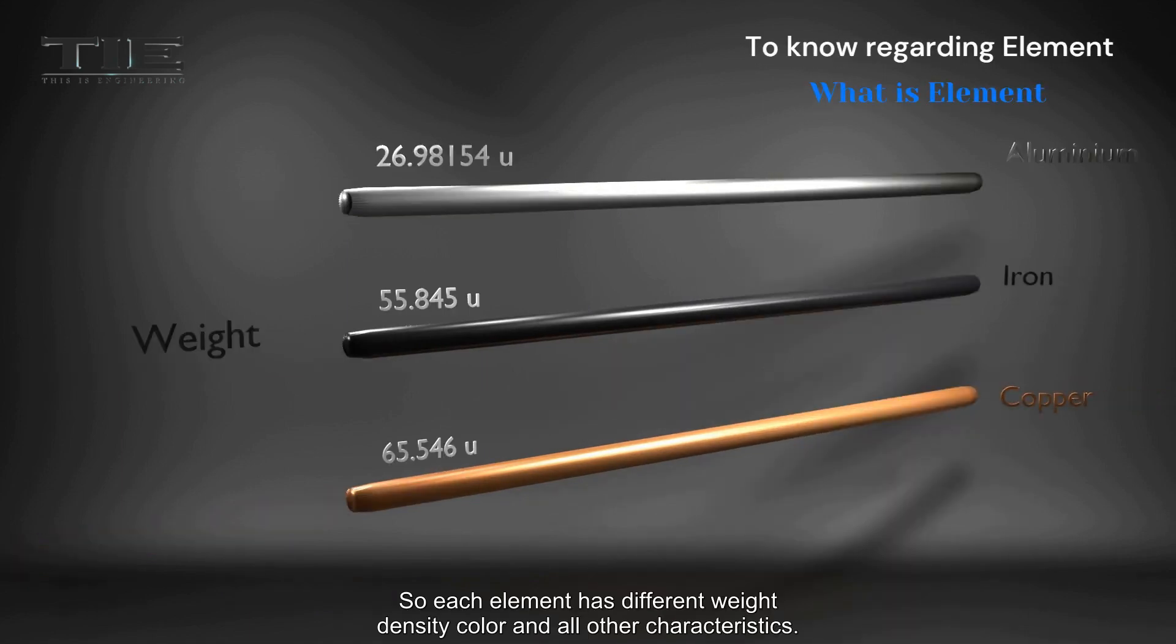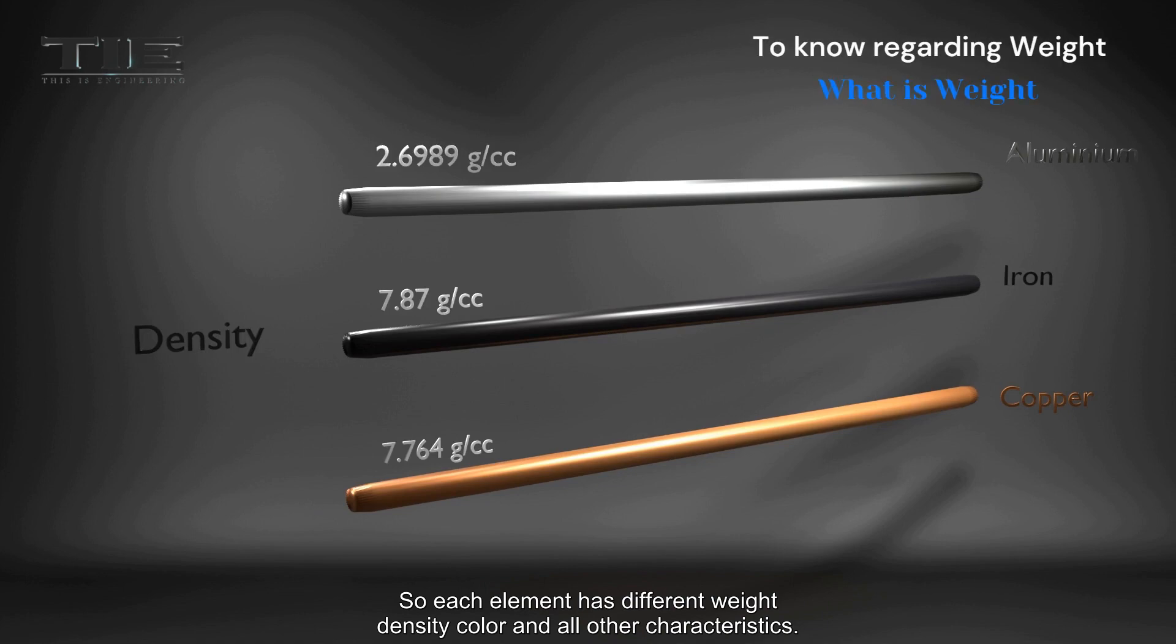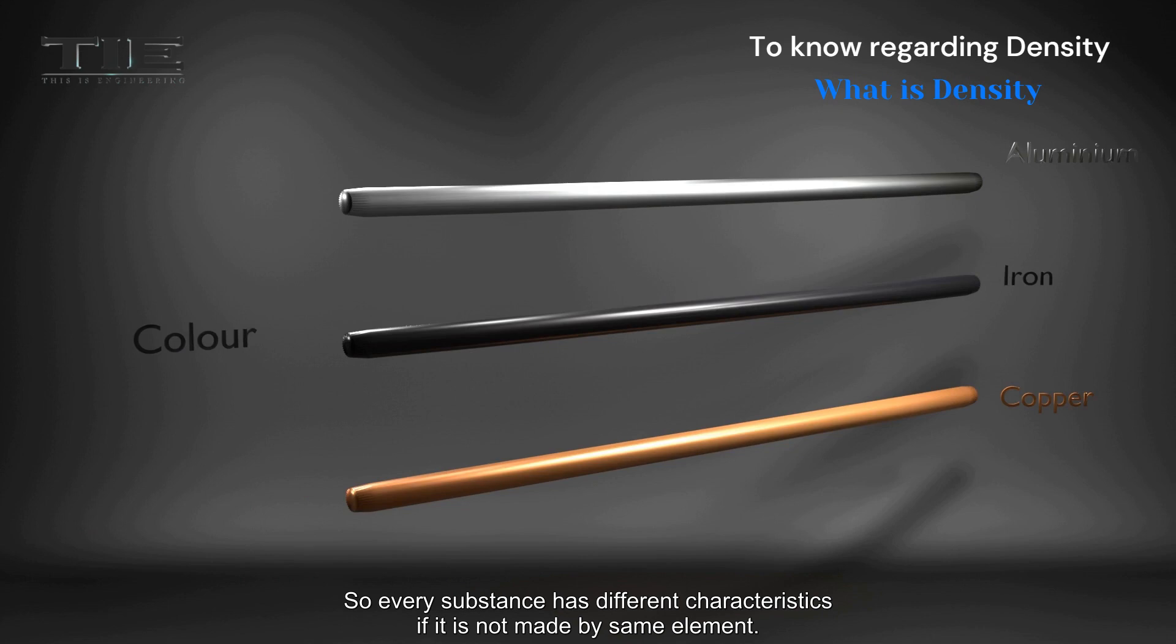So, each element has different weight, density, color, and all other characteristics. So, every substance has different characteristics if it is not made by the same element.